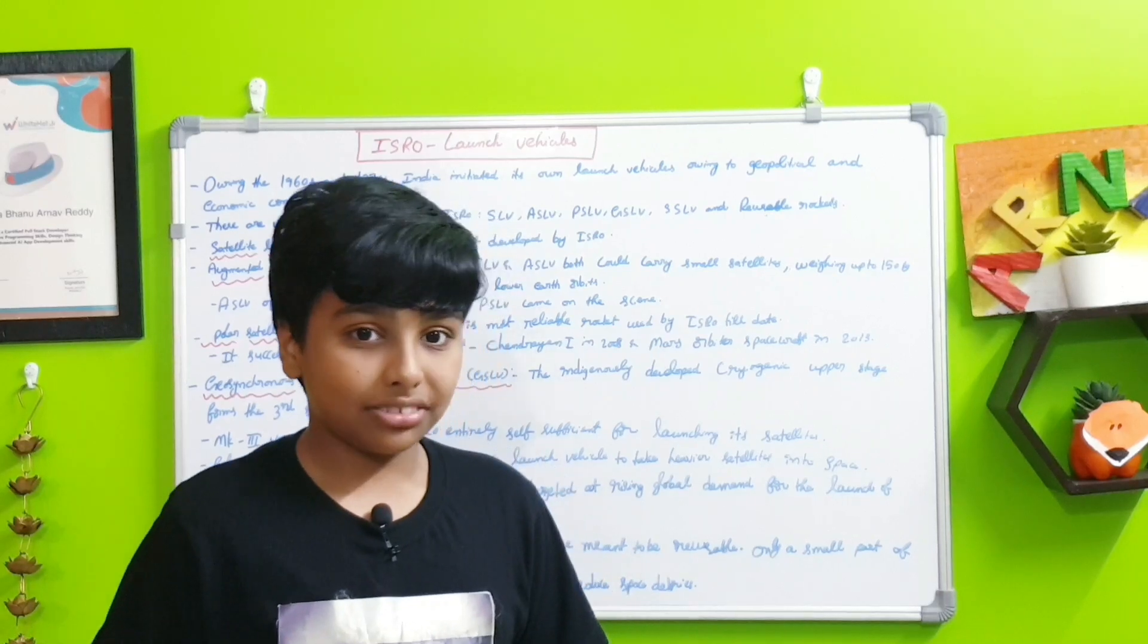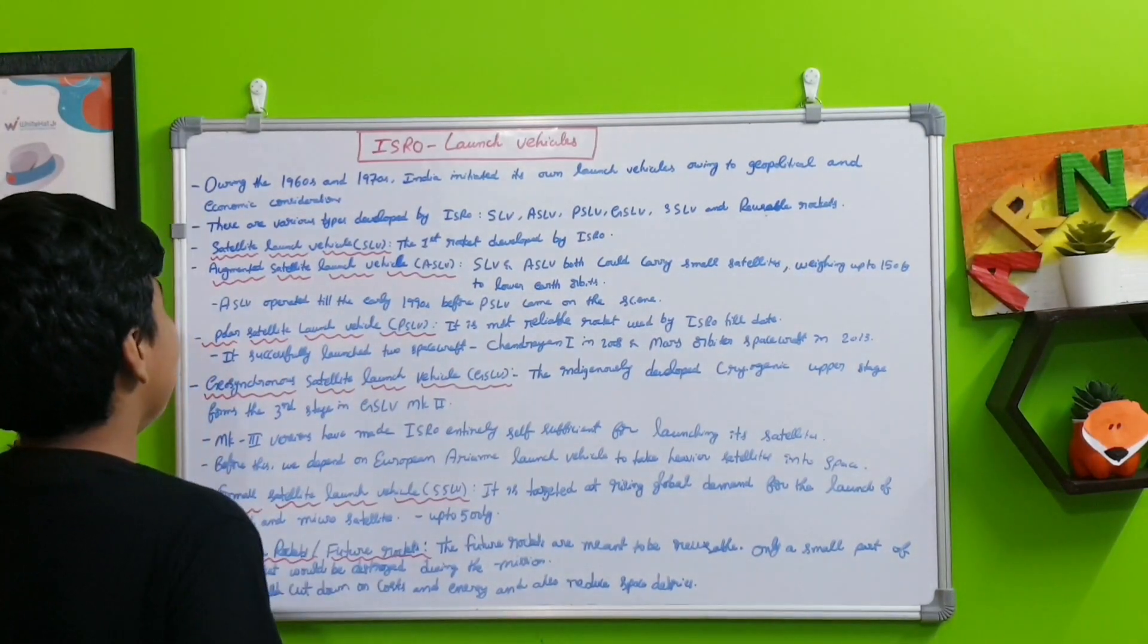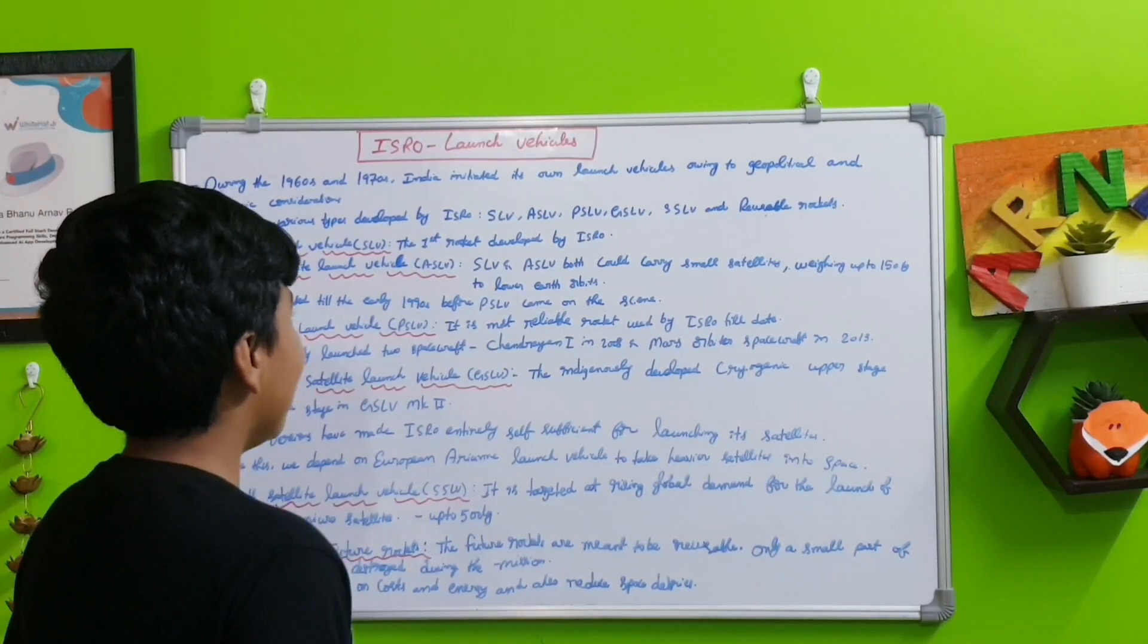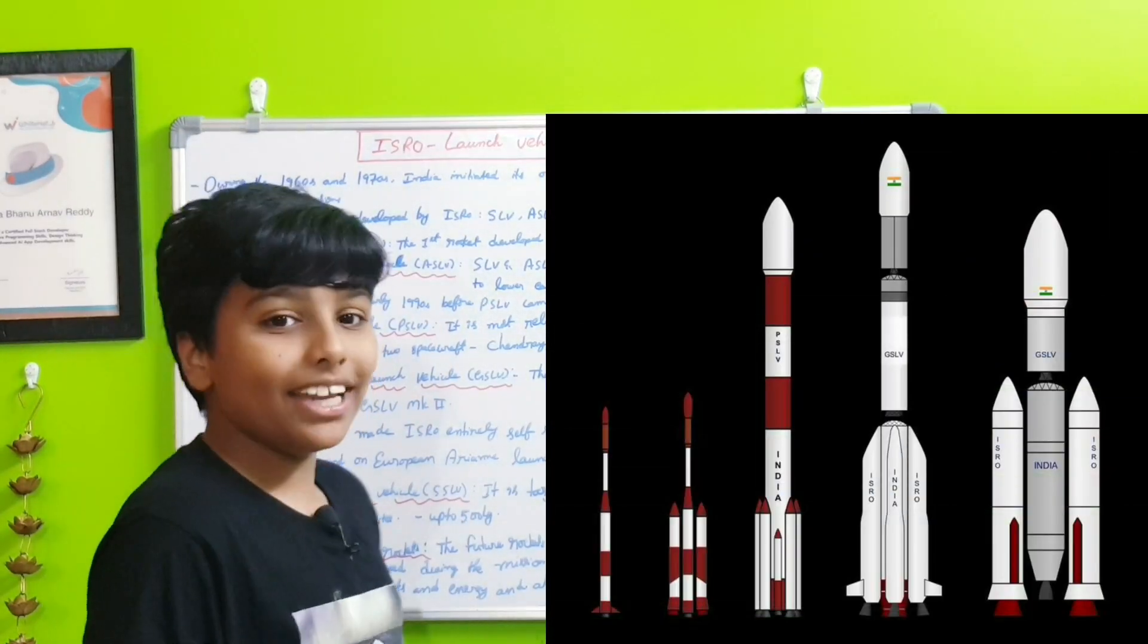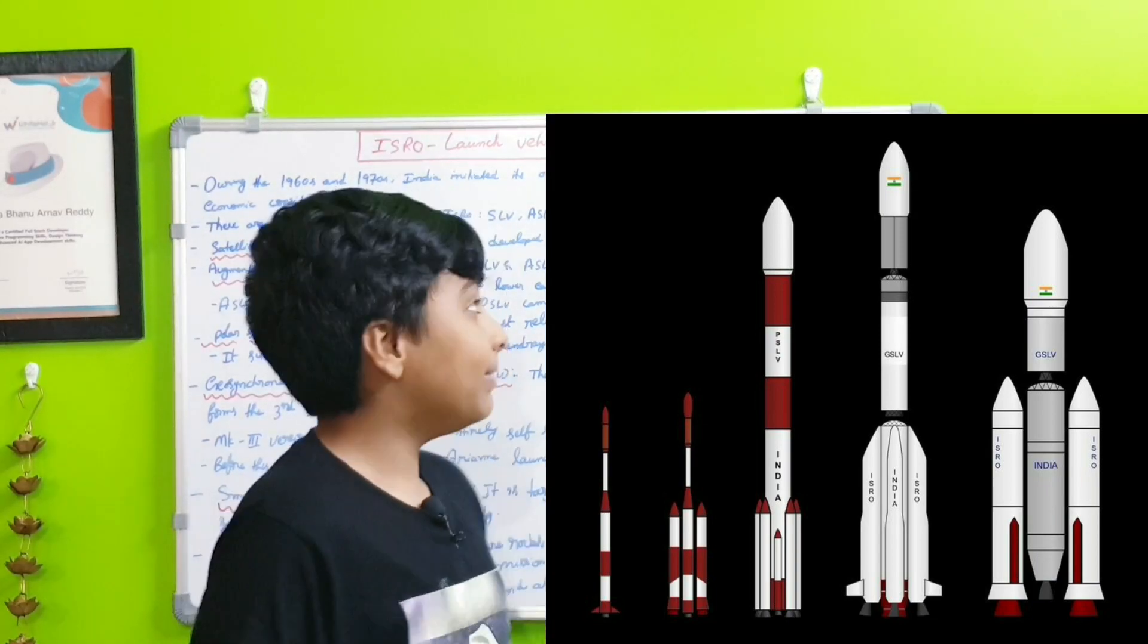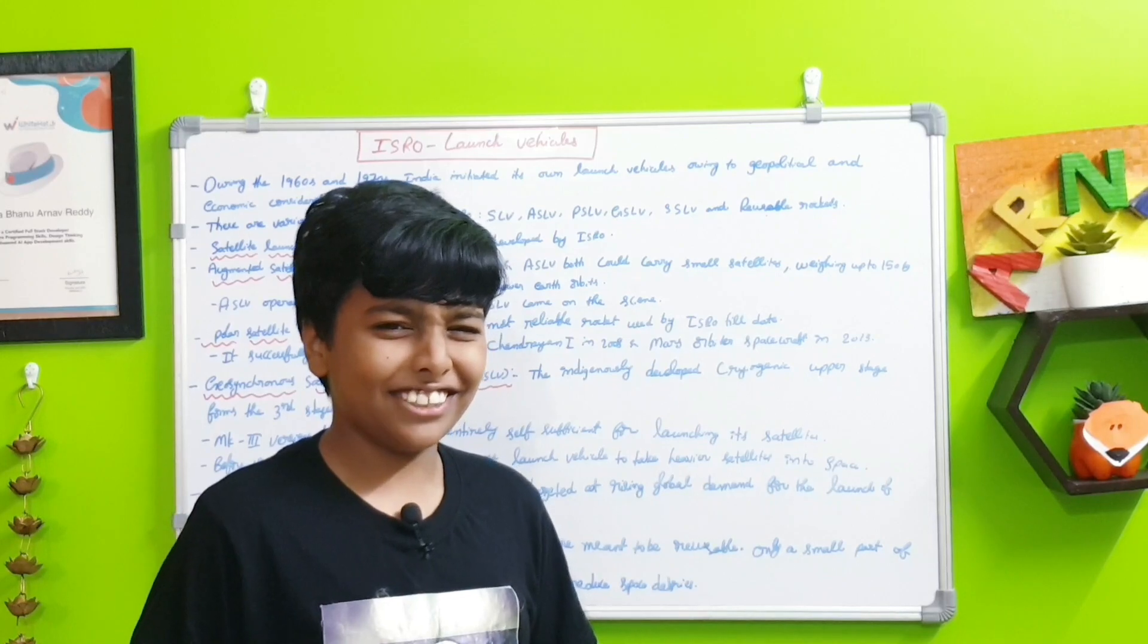There are various types of launch vehicles developed by ISRO: the SLV, the ASLV, the PSLV, the GSLV, the SSLV, and other reusable rockets.